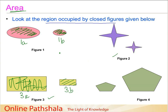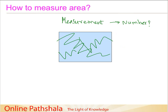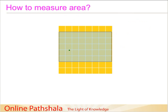Once we understand that we need area, the second question is: how do I measure area? Measurement simply means putting a number to something. So how do we put a number to this region? There is a way: we take a rectangle whose area we want to find and place it on a square grid. This grid is made up of small squares, each one centimeter by one centimeter. We superimpose the rectangle and align its borders along the squares in the grid.